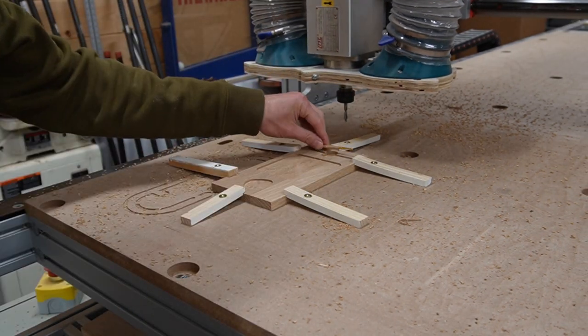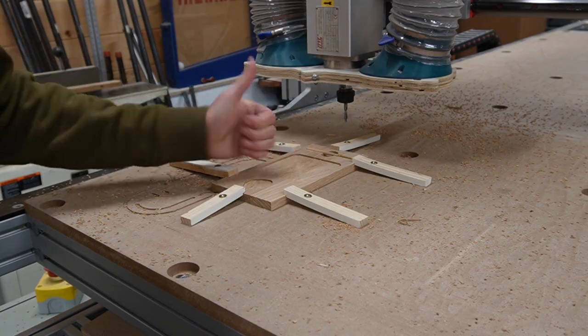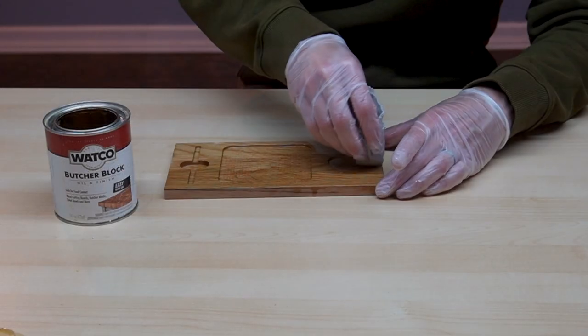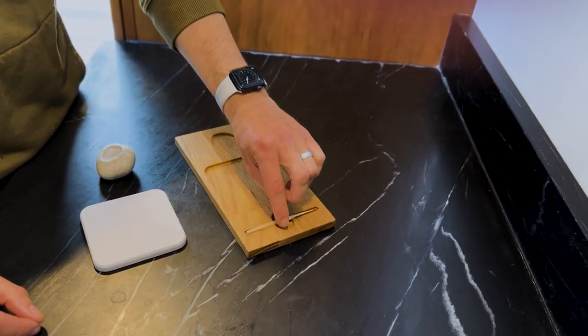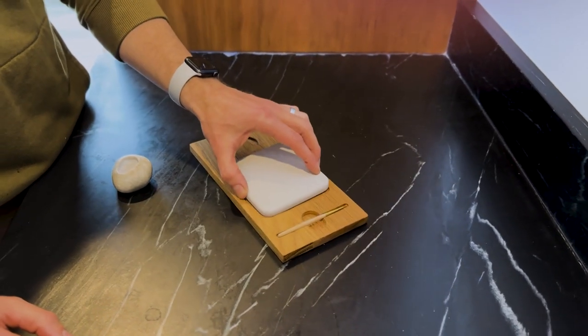With everything fitting well, I popped the palette off of the CNC, quickly sanded it once more to break the hard edges, and then applied a coat of butcher block oil. Now we can place all the pieces in their homes and put the art palette to use.